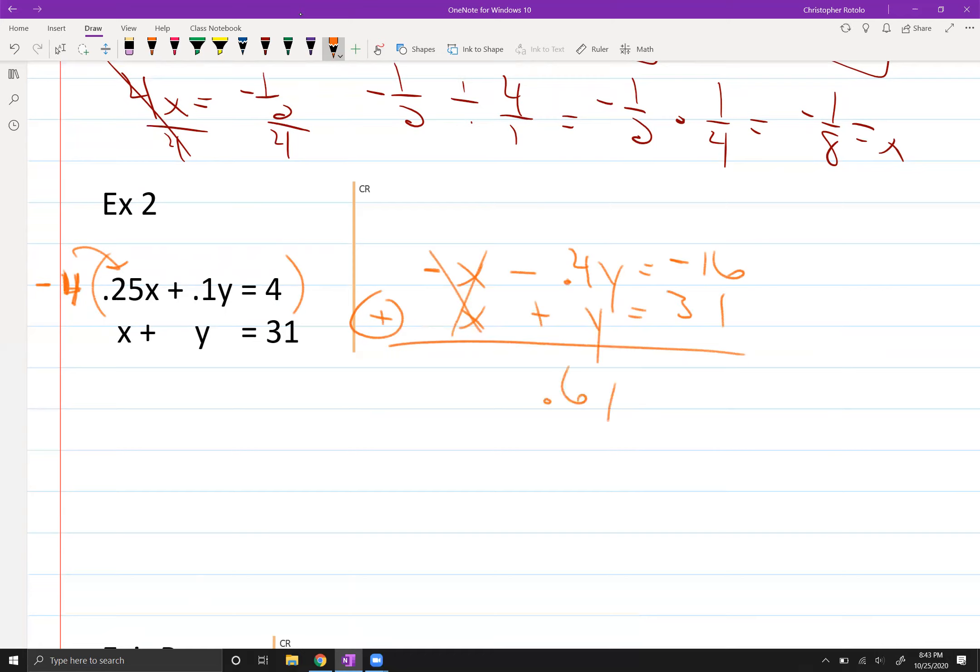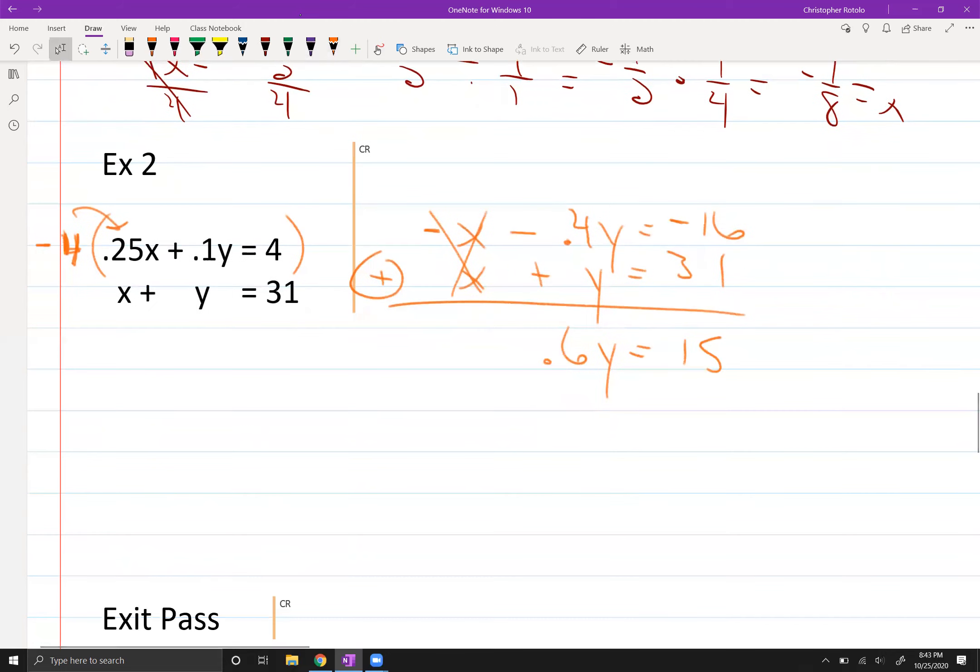I got 0.6y equals 15 left over. I know what you're thinking. Hey, you got a trick for this? Sure. 0.6 is actually what? 6 tenths. That's actually what? 3 fifths. So this is 3 fifths of y equals 15. So how do you get rid of that? You multiply by 5 thirds. You're like, hey, that wasn't extremely helpful. Well, sure it is. What's 15 divided by 3? It's 5. So y turns out to be 15.